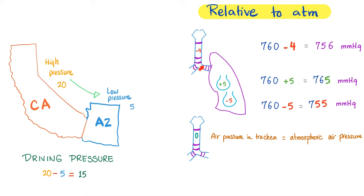When we talk about pressure in our respiratory system, we're talking about pressure relative to the atmosphere. When I say the pressure in my trachea is negative 4, it means 760 minus 4, so the pressure inside my trachea is 756 mmHg — lower than atmospheric pressure by 4. If the alveolar pressure is positive 5, it means the alveolar pressure is greater than atmospheric pressure by 5, so it's 765 mmHg. Zero means the pressure equals atmospheric pressure.